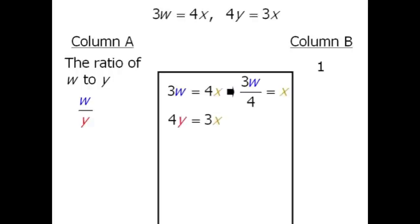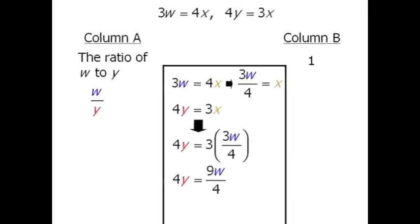Now let's look at our other equation. We're going to take X here and replace it with 3W over 4. From here, we can simplify the right-hand side. And now we'll multiply both sides by 4.